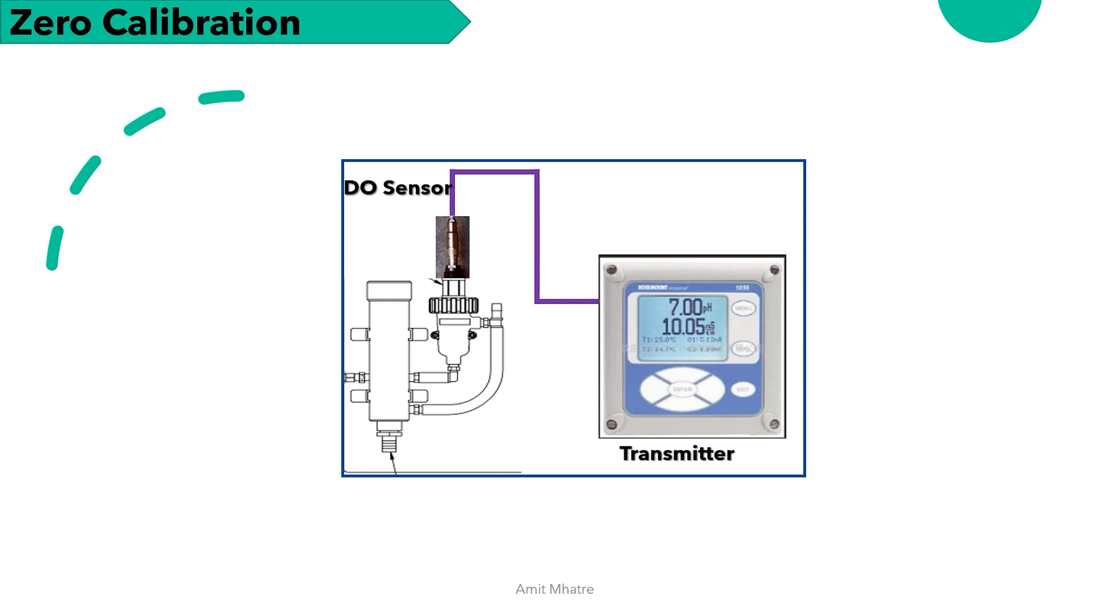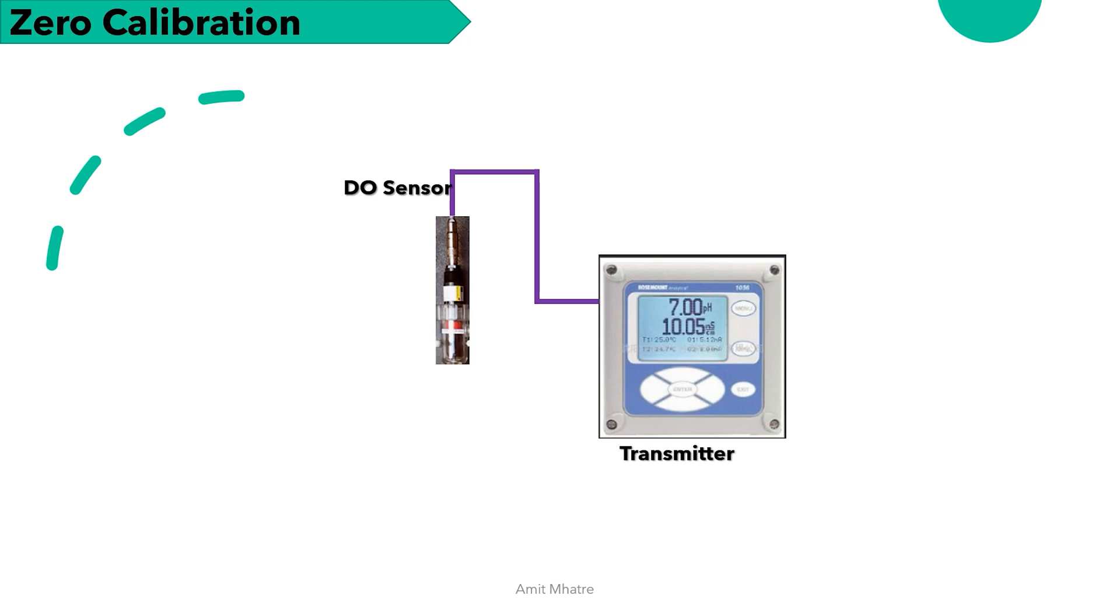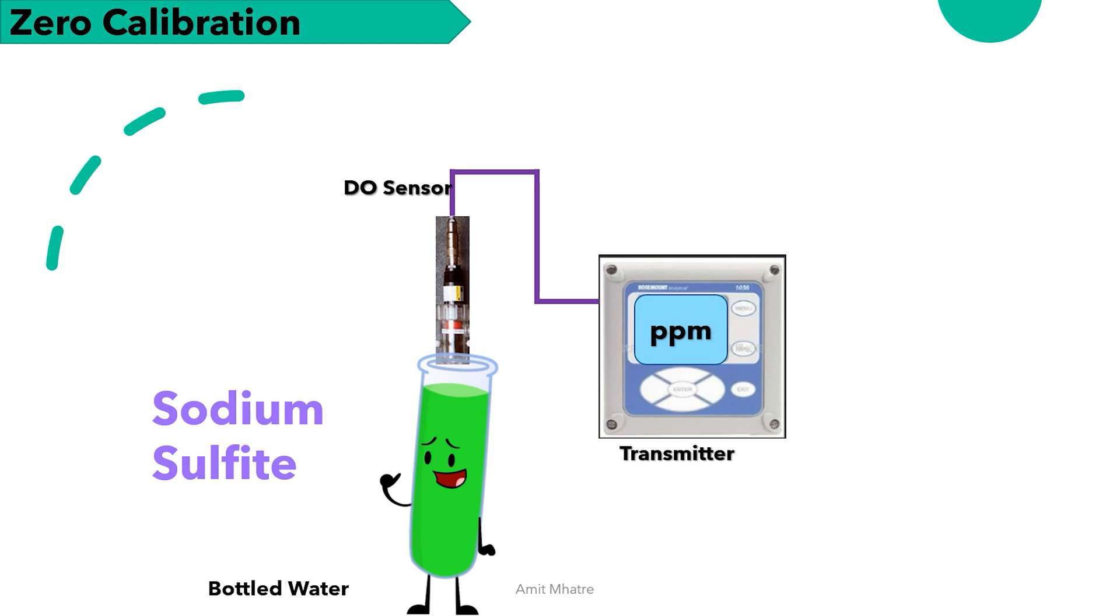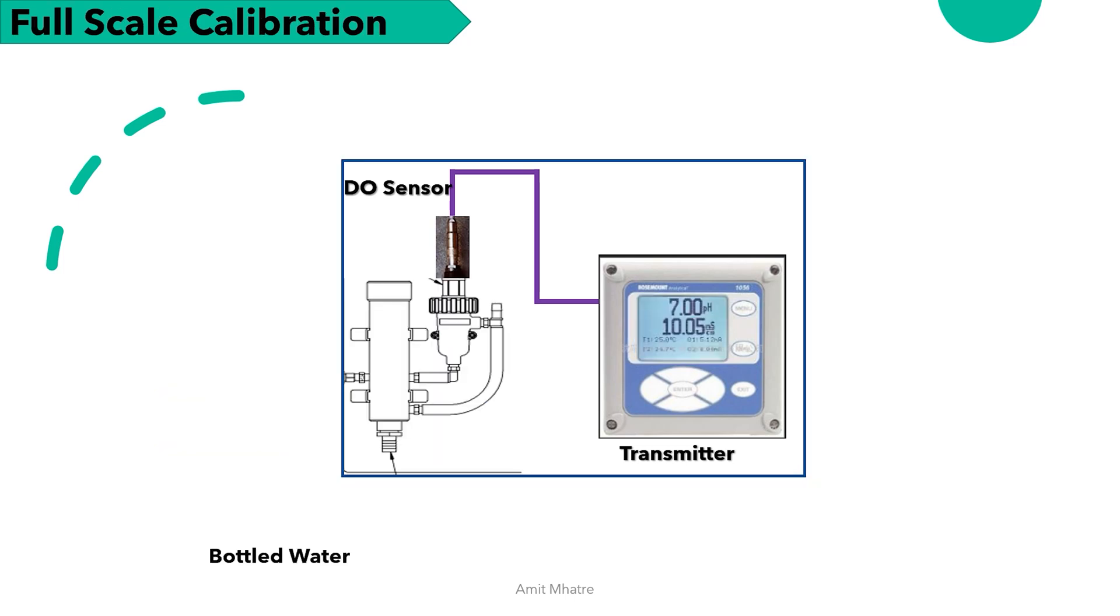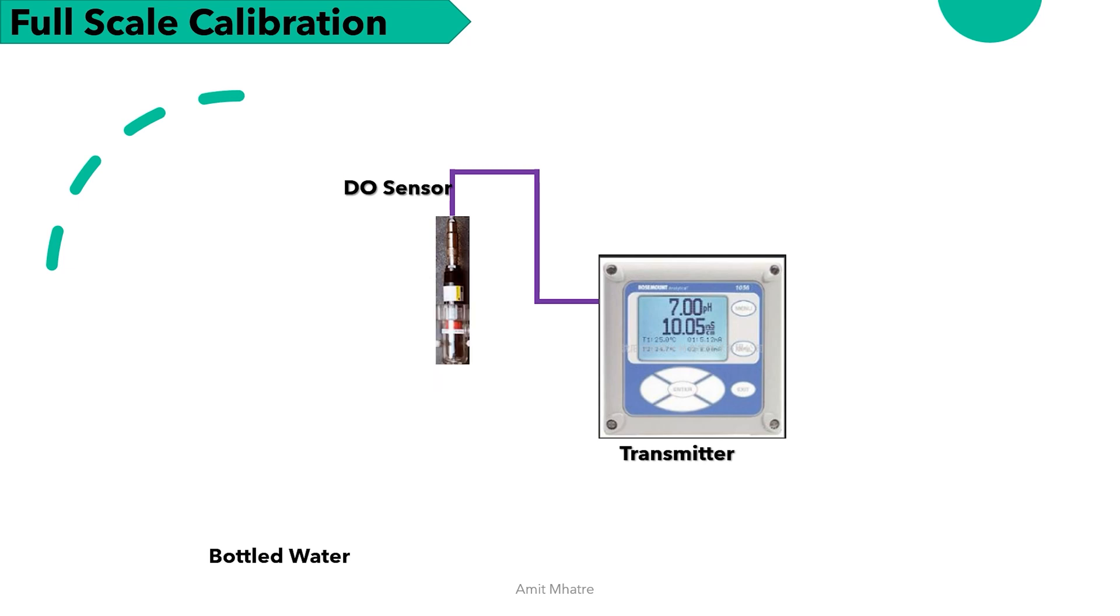For zero calibration: pour a cup of deionized or bottled water, add a teaspoon of sodium sulfite to the water, place sensor in the water, wait until the sensor current has reached a stable low value, at least 2 hours, check reading in transmitter. For full scale calibration: pour a small amount of water into a cup, suspend the sensor keeping the membrane dry above the surface of the water. Once readings are stable, the transmitter automatically calculates the equilibrium solubility of atmospheric oxygen in water under the prevailing temperature and barometric pressure.